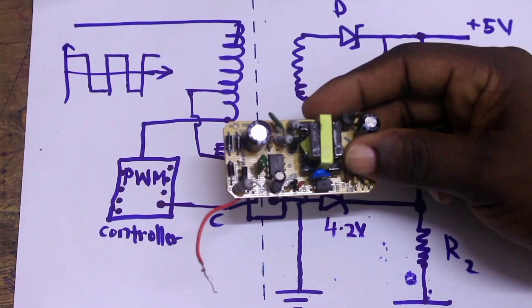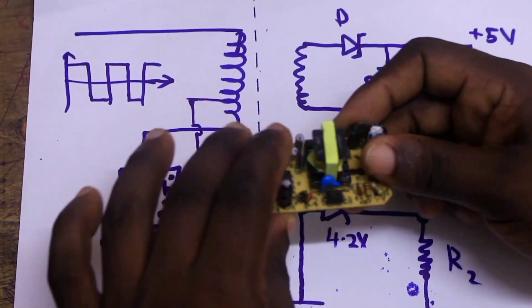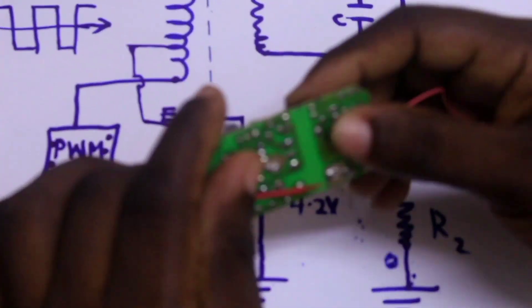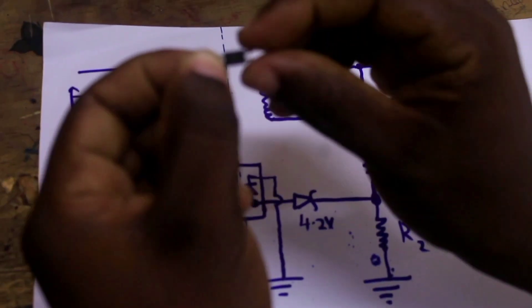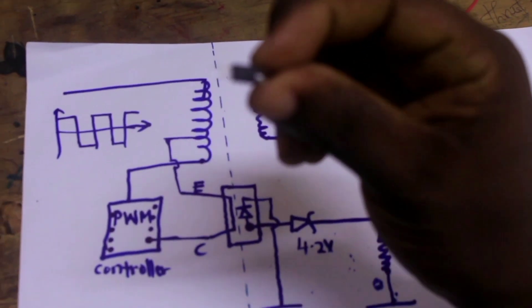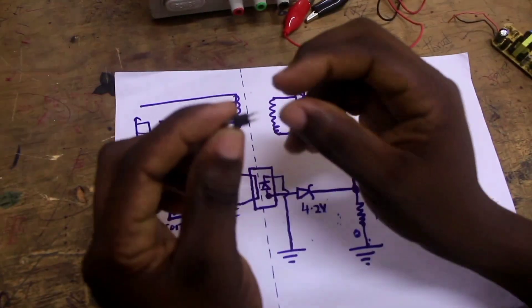I will disconnect this optocoupler from the circuit, so that I can show you how it works. I have disconnected the optocoupler from the circuit. You can see, it consists of four terminals.